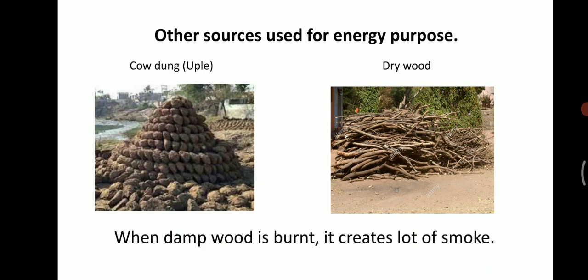There are other sources of energy also. Almost two-thirds of the population of India uses cow dung — dried cow dung cakes called 'uplaas' — and dry wood gathered from the forest for cooking food and other purposes. They also use these to get warmth in the winter season. Poor people who do not have enough money to buy other fuels use such things. Sometimes during the rainy season, when they get damp wood and burn it, a lot of smoke is emitted. This spoils their health, causing diseases like asthma and other lung diseases.